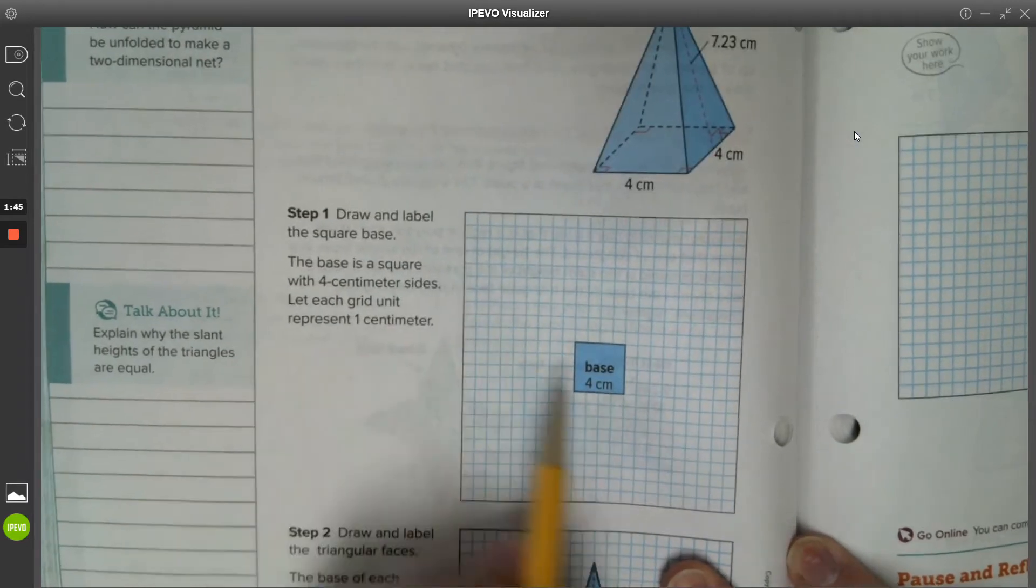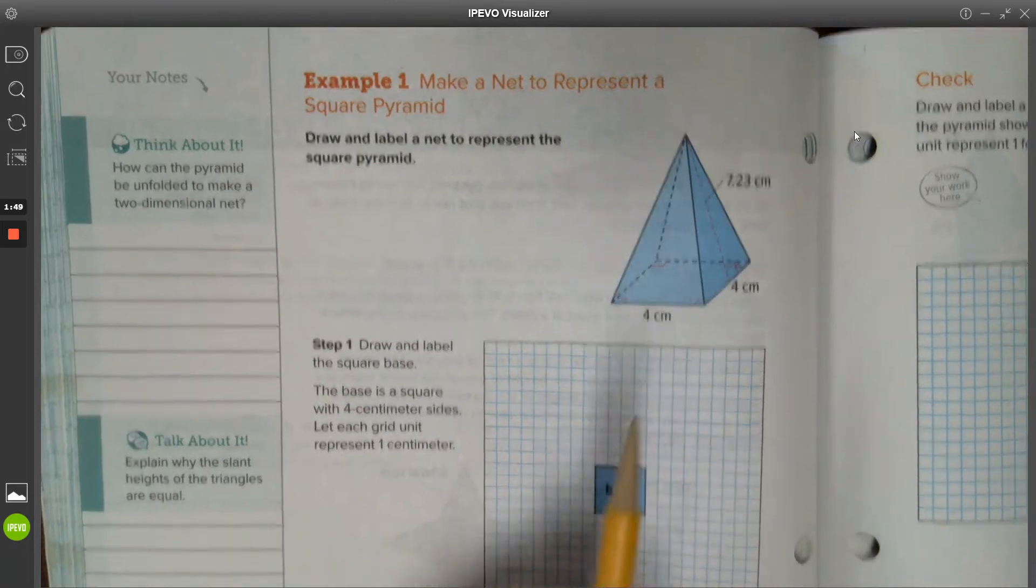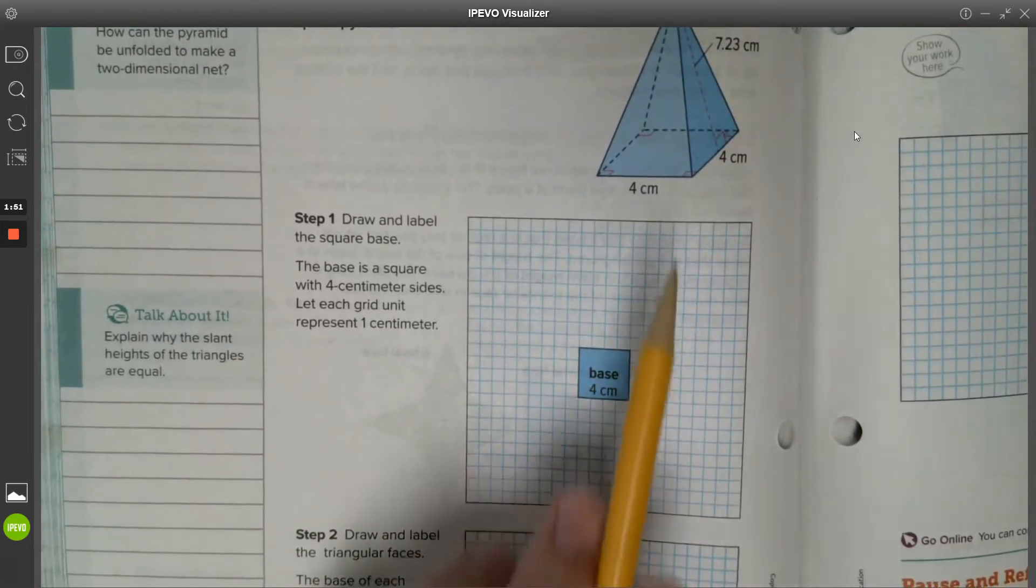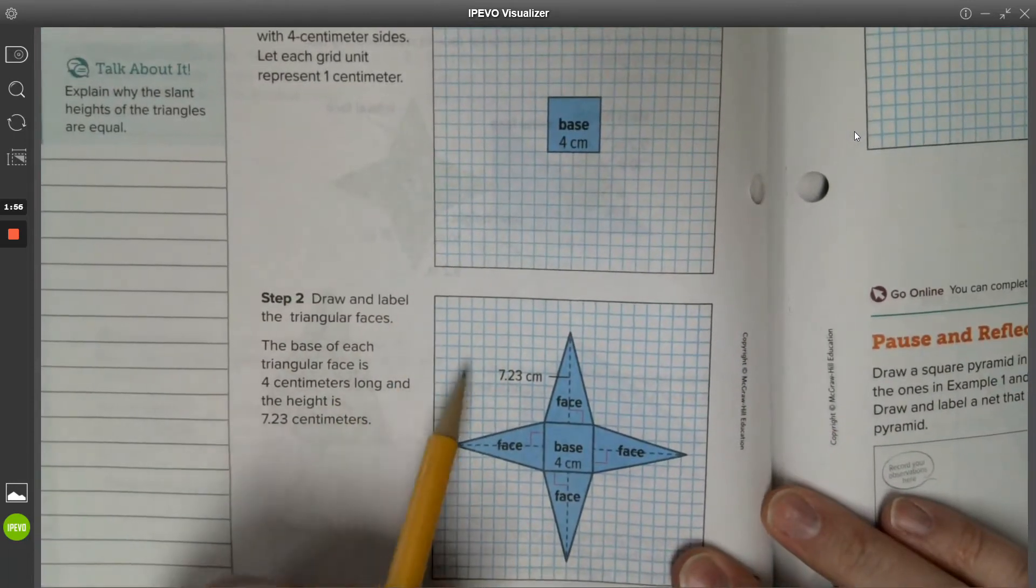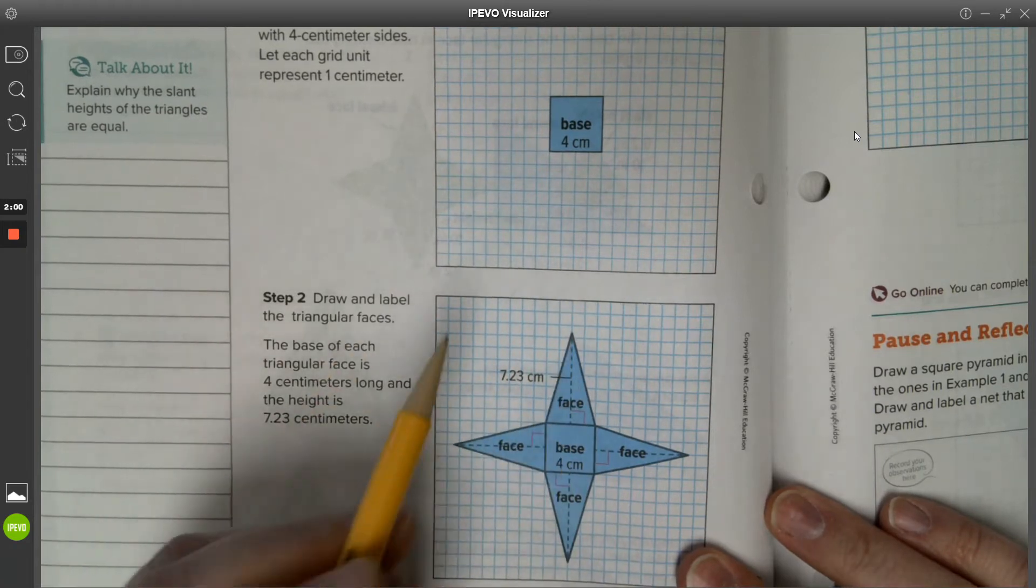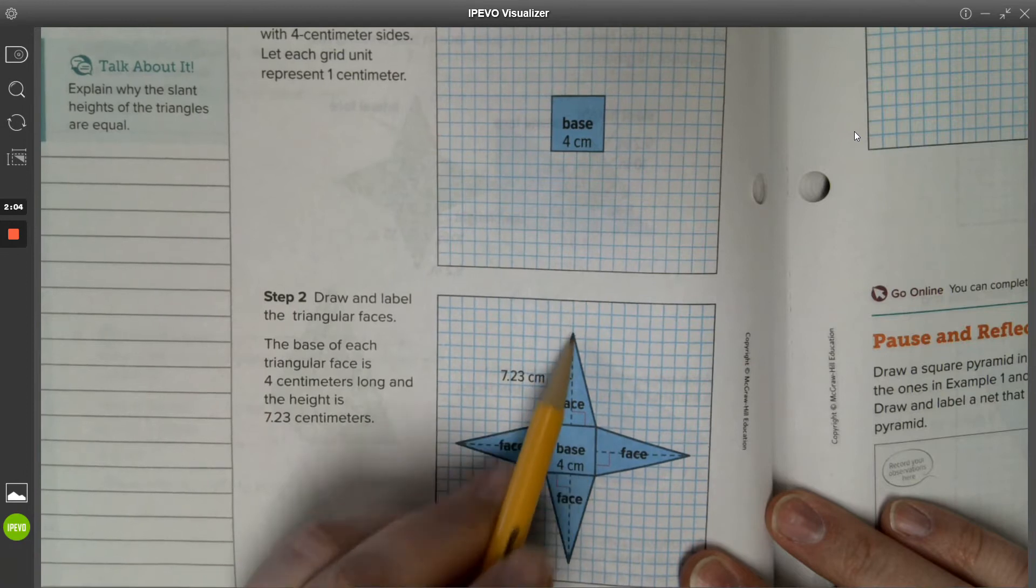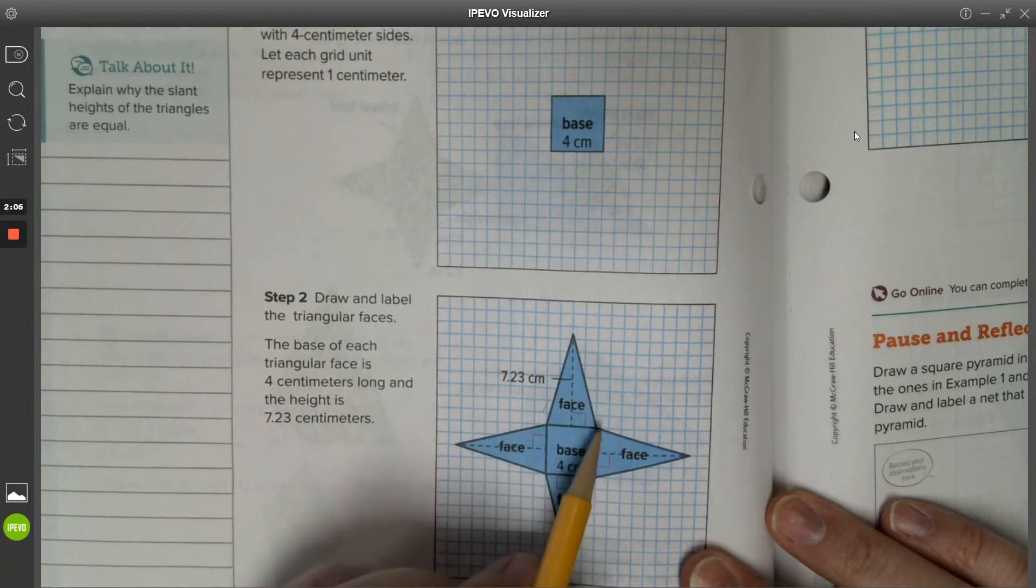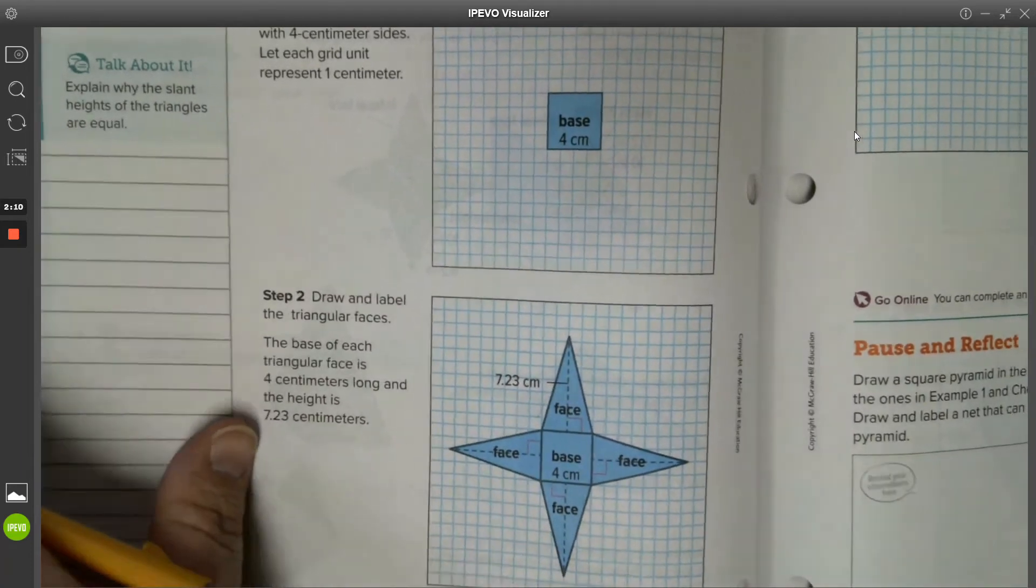On page 518, this is where we are next. So the square base pyramid is here, and to create a net for that we first draw its base and we can see the base is 4 by 4. The next step would be to draw four congruent faces all being the exact same shape, same shape and size, to the height of 7.23. And so this is what a net of a pyramid would look like.